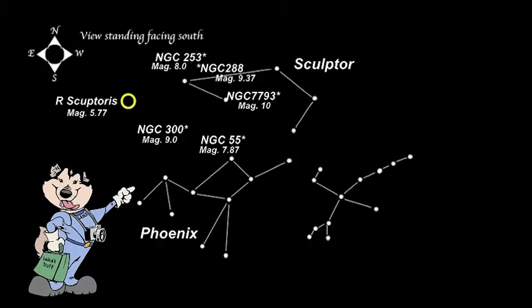Moving on to Phoenix, we find Robert's Quartet. As the name implies, this is a group of four galaxies.